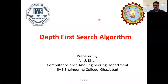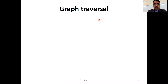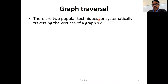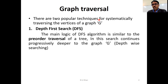In this lecture, I will explain the graph traversing algorithm that is a depth-first search algorithm. Here we understand the concept of how we can traverse a nonlinear data structure. Graph traversing means visiting each and every node at least once. There are two popular techniques for systematically traversing the vertices of a graph. The first one is the depth-first search technique.